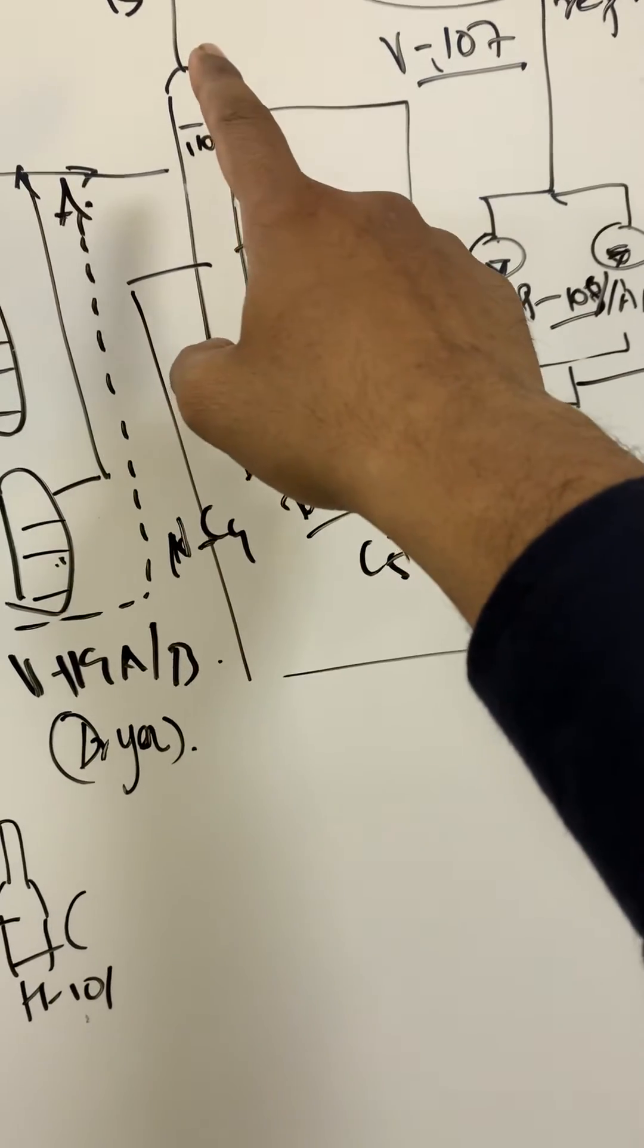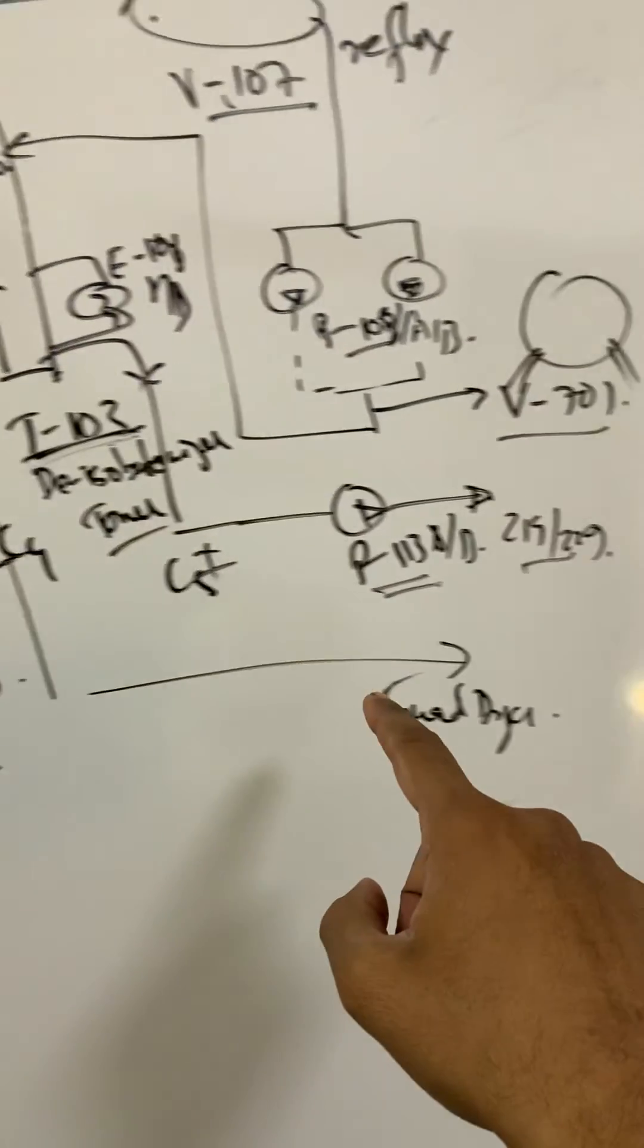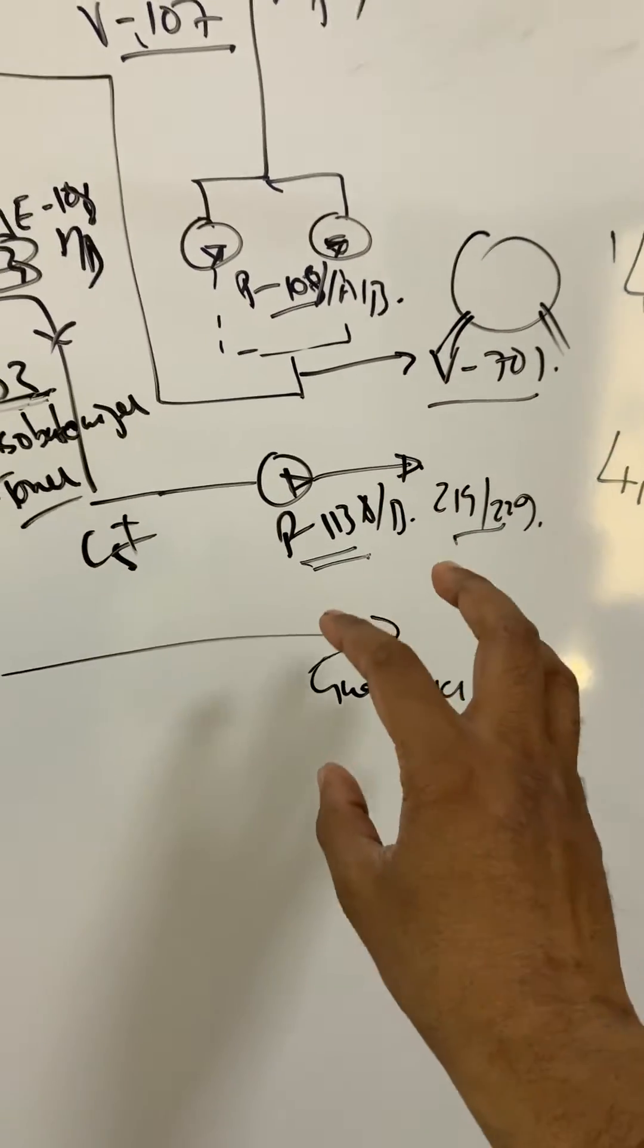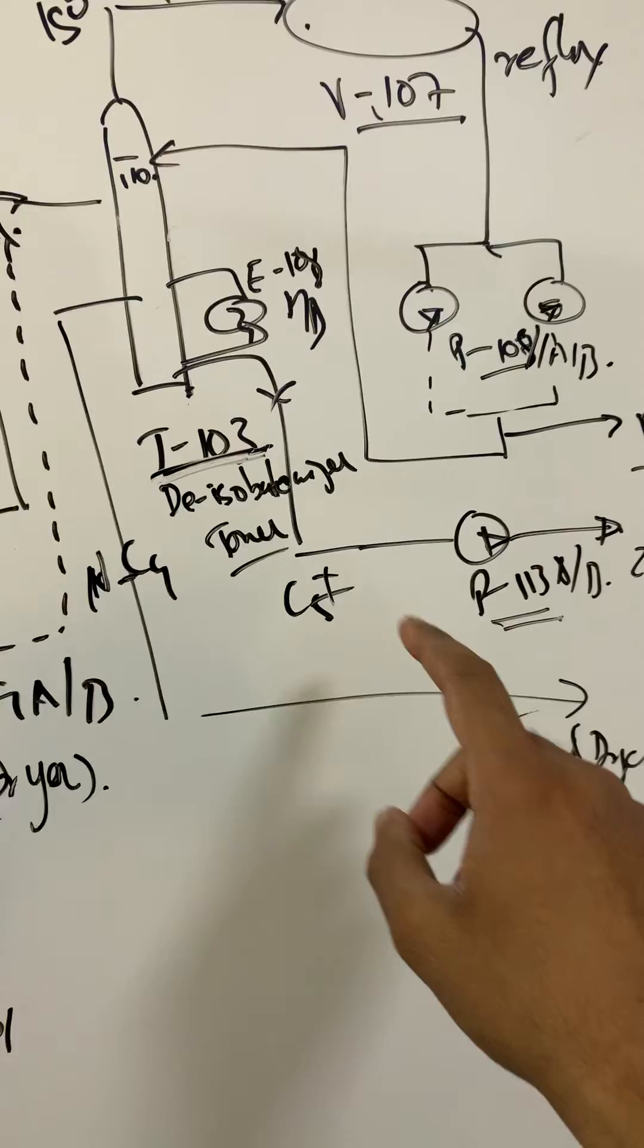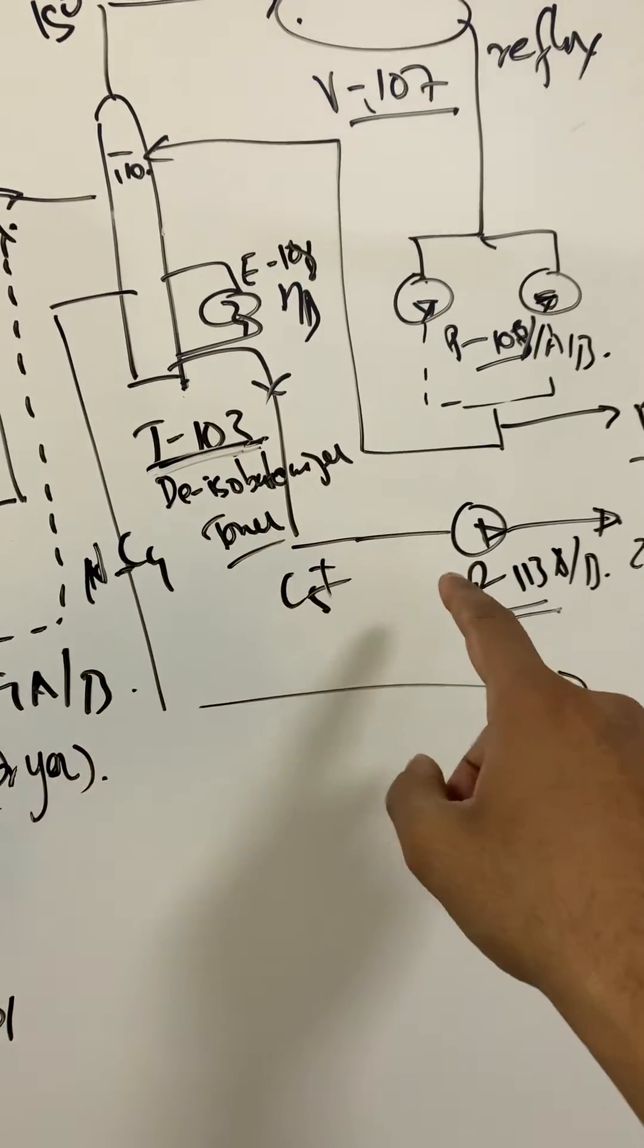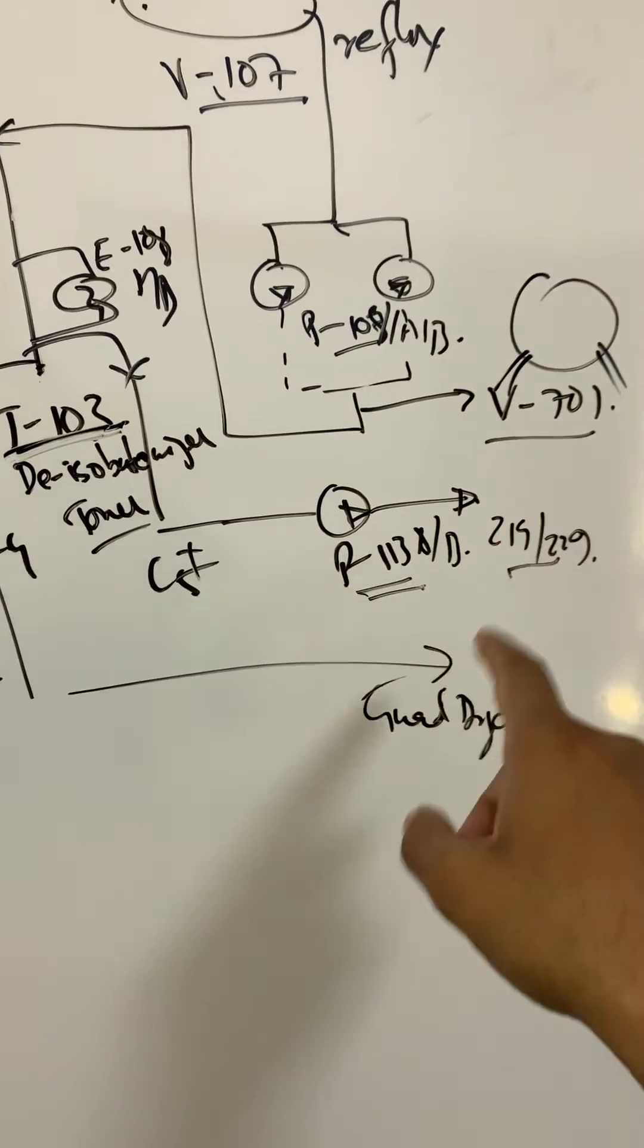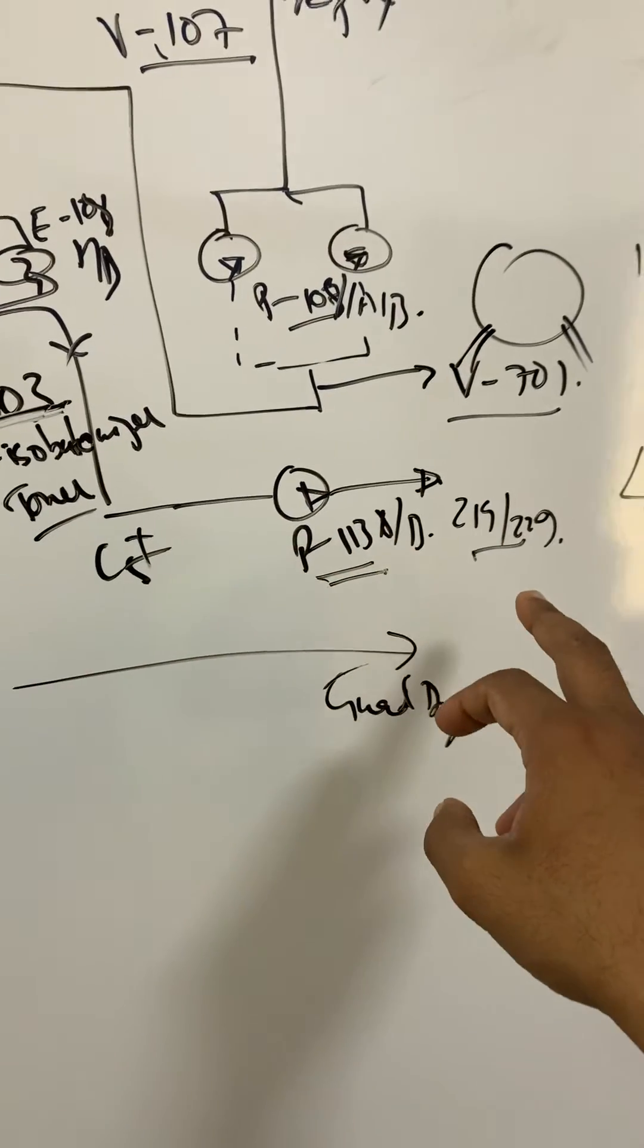The top cut, mid cut is butane that goes to the guard dryers. We will talk about that later, possibly tomorrow. The bottom C5 plus goes to P113 AB, those pumps, and that goes to the 219 or 229.